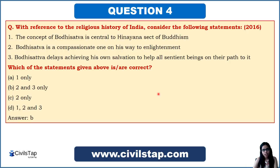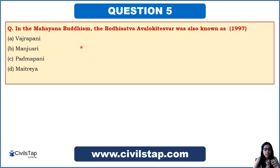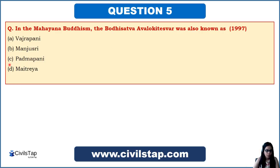This question came in the Prelims of 1997: 'In Mahayana Buddhism, the Bodhisattva Avalokiteshwara was also known as?' Options are Vajrapani, Manjushri, Padmapani, and Maitreya. As explained, Avalokiteshwara is also known as Padmapani — so the answer is option C.